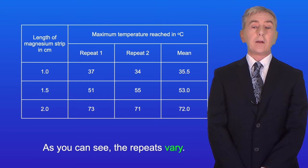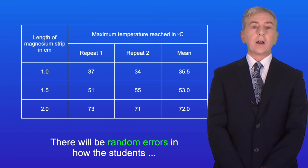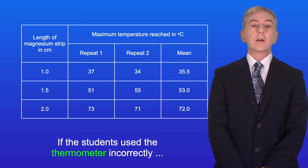As you can see, the repeats vary and this variation is caused by random errors. There'll be random errors in how the students measure the lengths of the magnesium strips, and if the students use the thermometer incorrectly there'll be random errors in measuring the temperature.